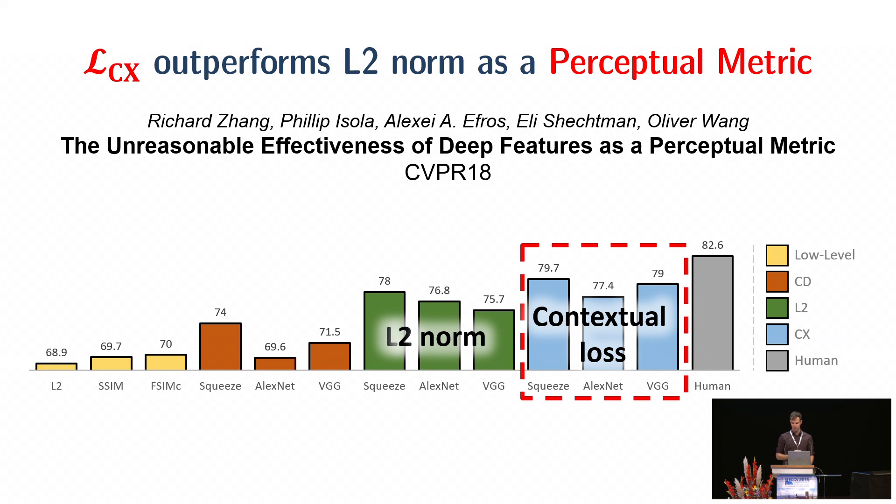Those of you who are familiar with the perceptual metric paper from CVPR18, we changed the setting there a bit and replaced the L2-norm with the contextual loss without any further training. And you can see that it's outperformed the L2-norm.